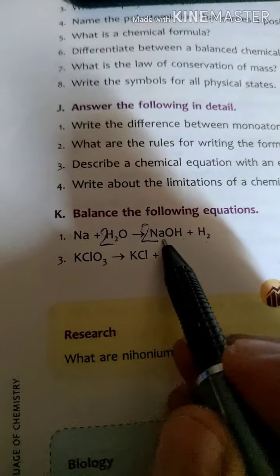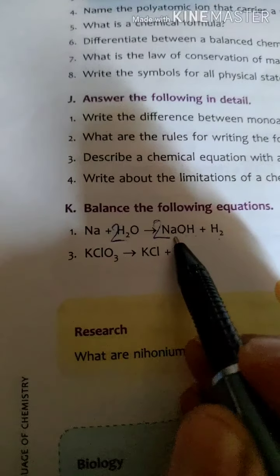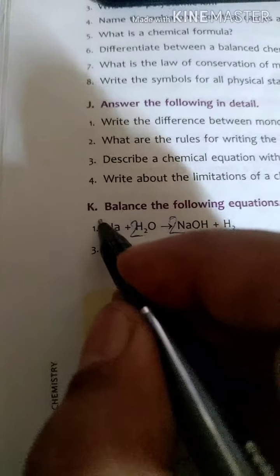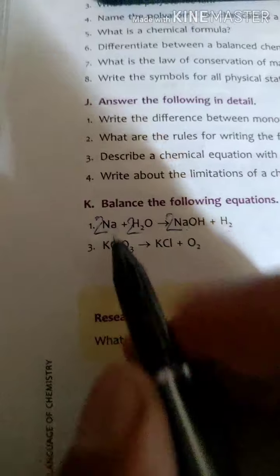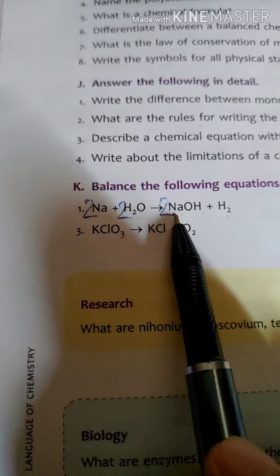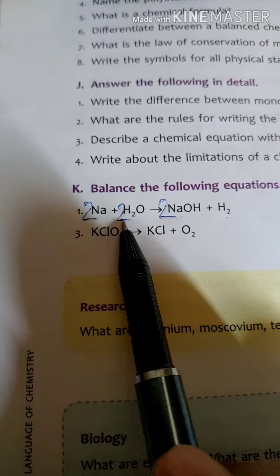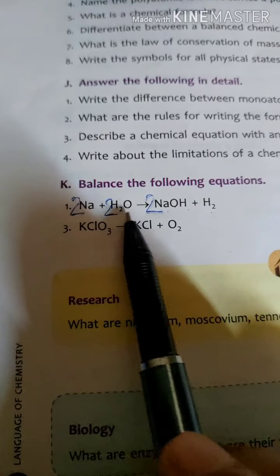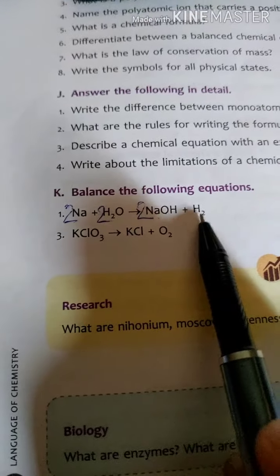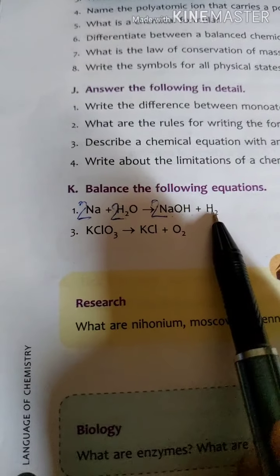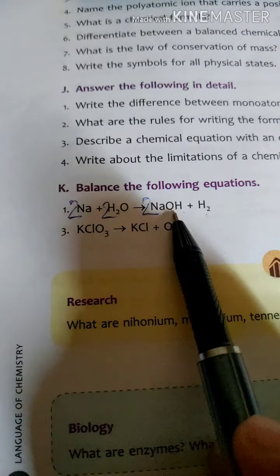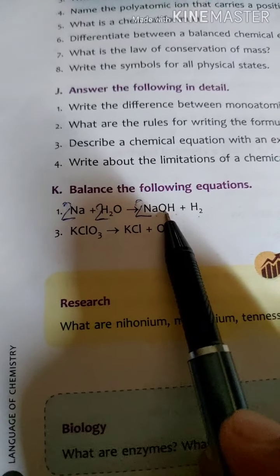But now the number of sodium atoms on the product side has become two. To make it equal, we put two in front of sodium on the left side. Now: sodium atoms are two on both sides; hydrogen atoms — two twos are four on the left, and two plus two equals four on the right; oxygen atoms — two on the left, two on the right. The equation is balanced.